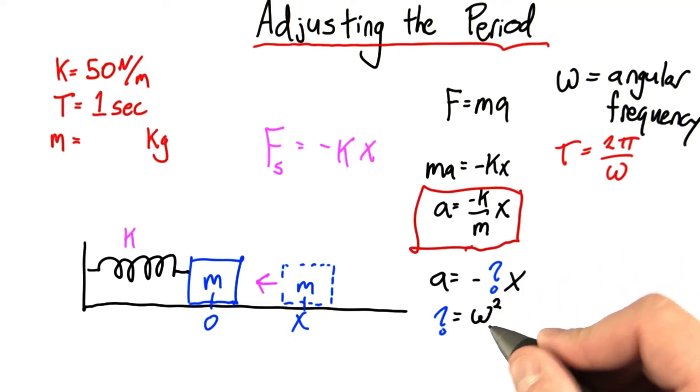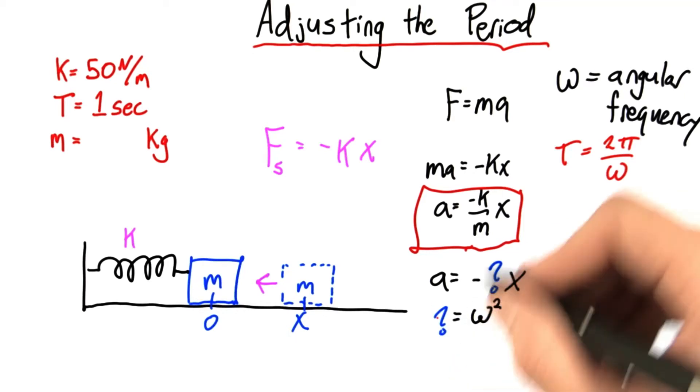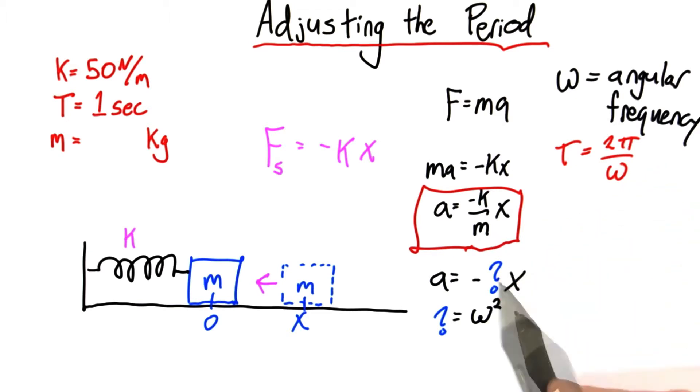Well, let's see. I said whatever this something is could be replaced with omega squared. Check it out. This something, in this case, the something that multiplies our x is k over m.